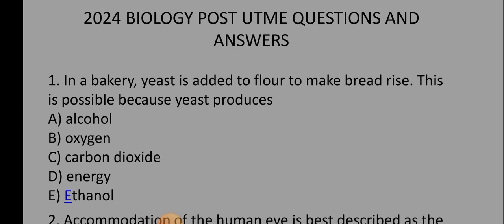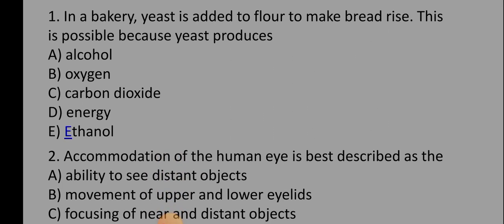Now the first question says, in a bakery, yeast is added to flour to make bread rise. This is possible because yeast produces: A) alcohol, B) oxygen, C) carbon dioxide, D) energy, E) ethanol. So yeast produces carbon dioxide, which is option C. That's the reason why it makes the bread rise.